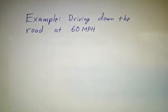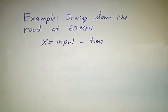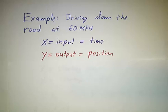For example, let's suppose you're driving down the road at 60 miles an hour. x is going to be our input, which is the time. y is our output, which is our position. And I claim that our position is a linear function of time.